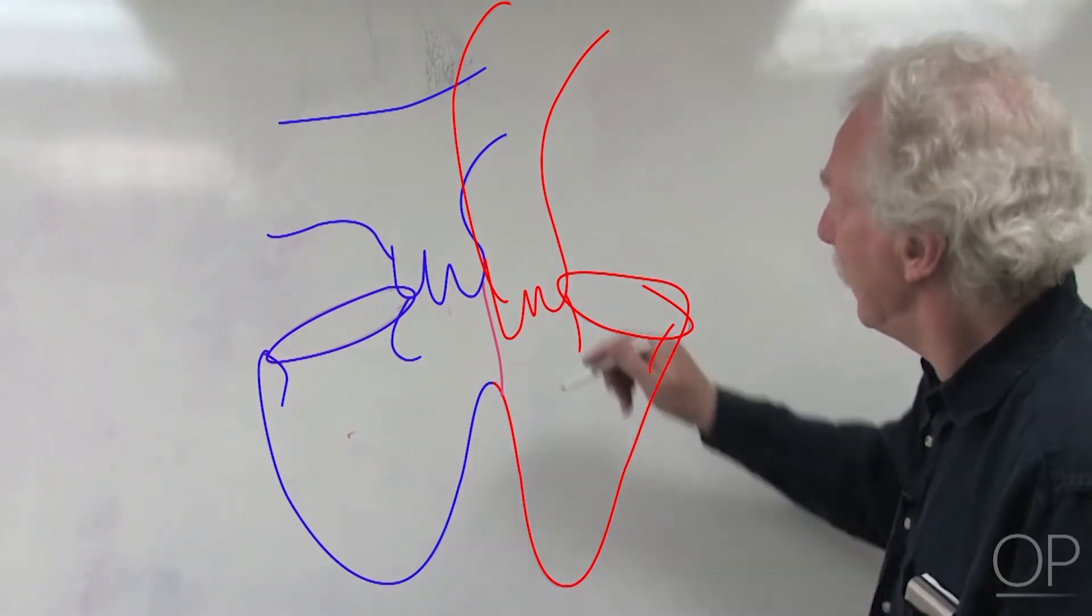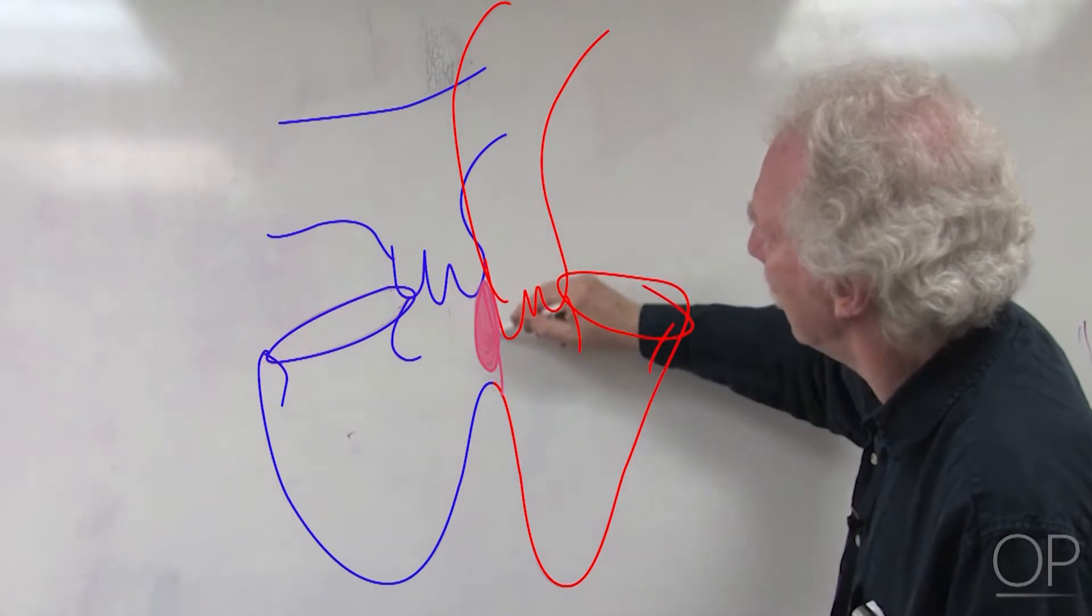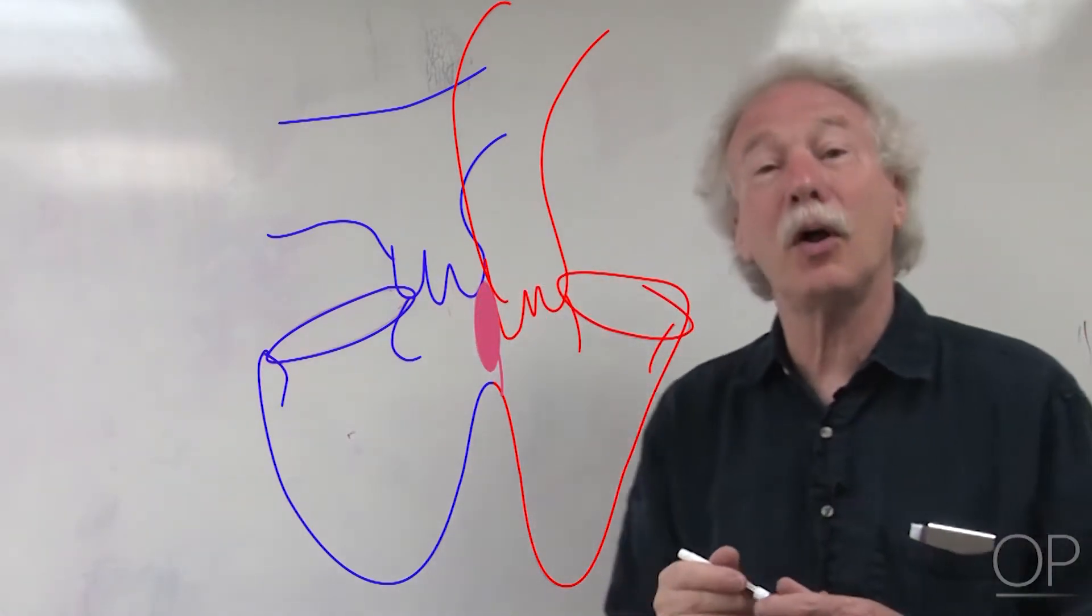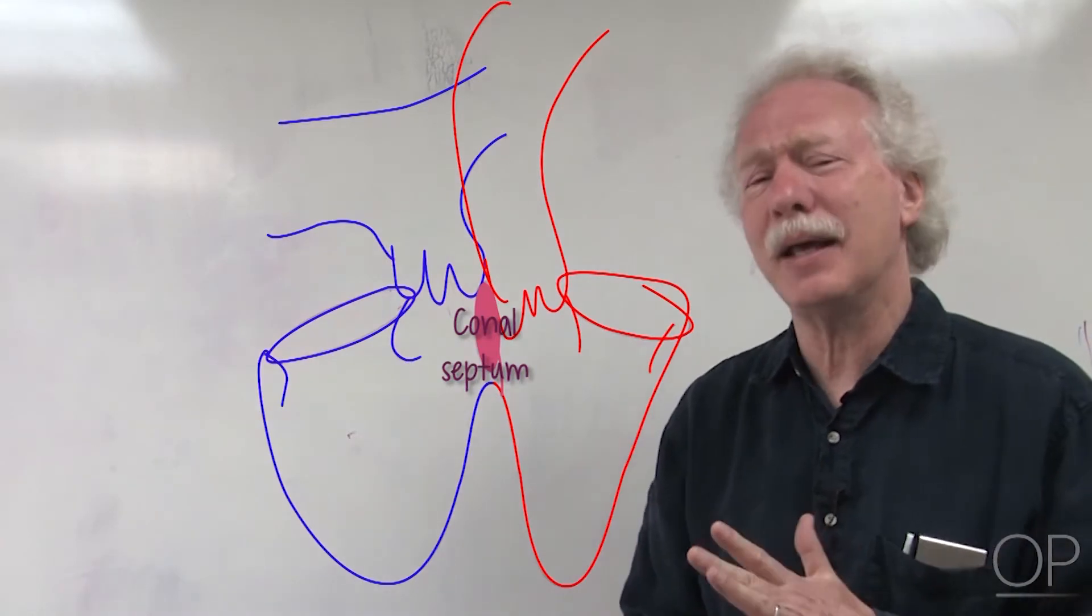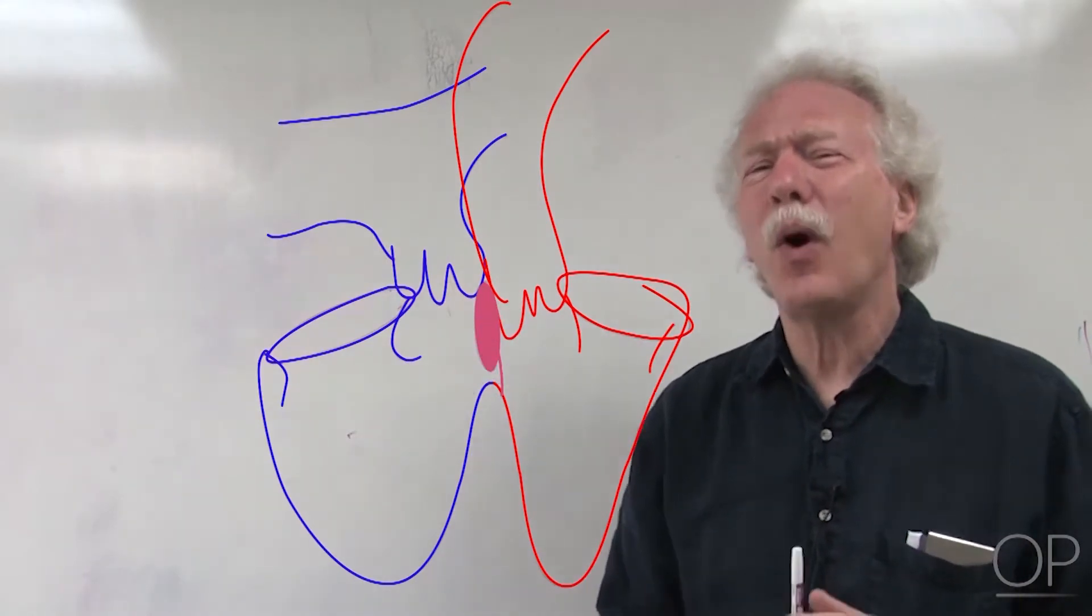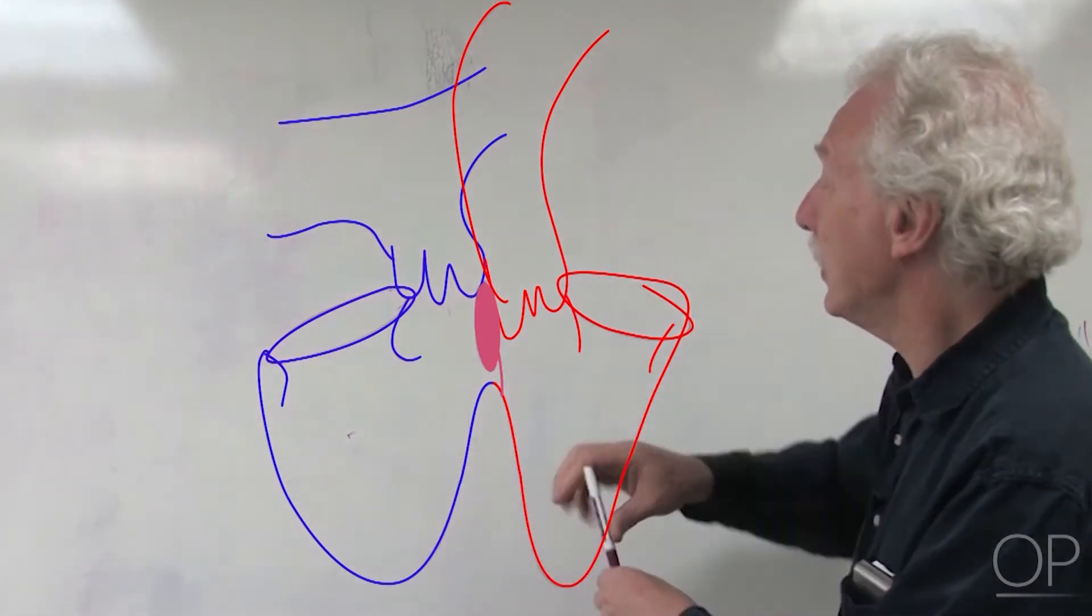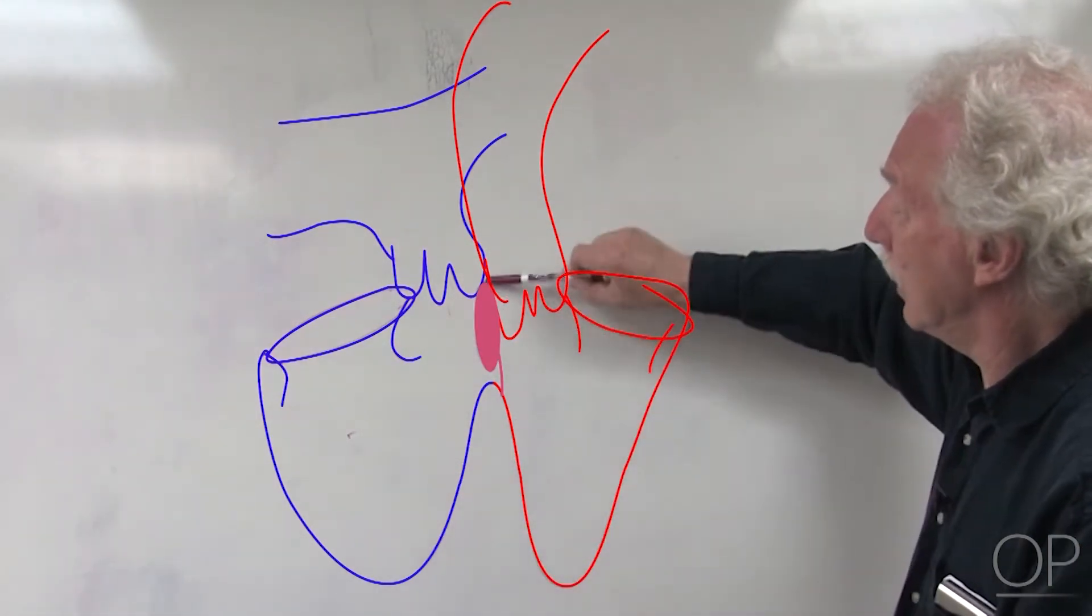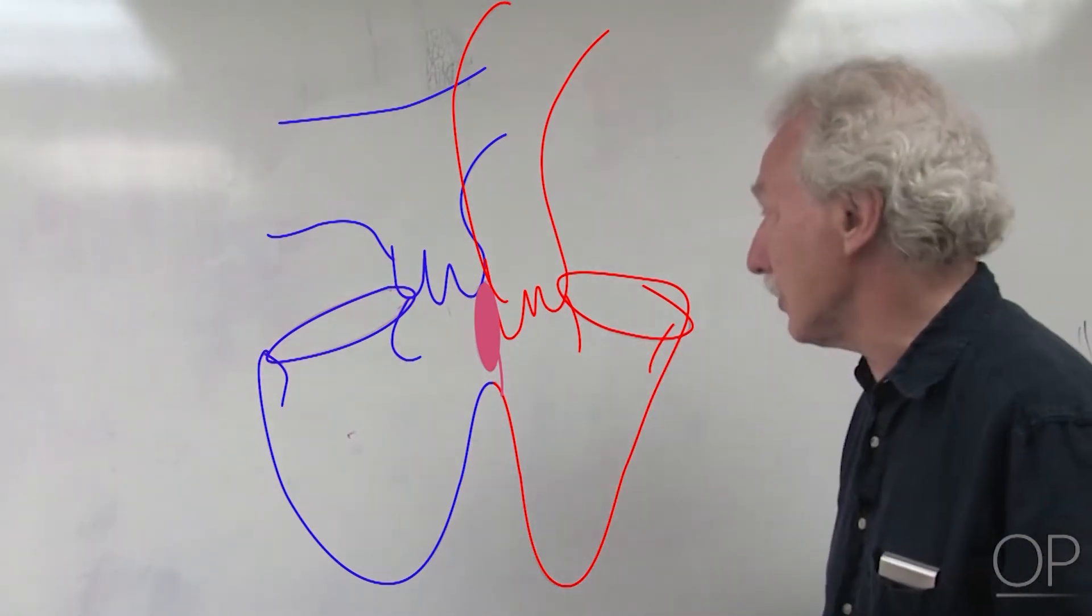This portion up here of the ventricular septum we're going to call the conal septum. The first concept I want to make is that there's really one thing that makes Tetralogy of Fallot, and that is when there is a malalignment between the conal septum and the rest of the ventricular septum. Everything else follows.